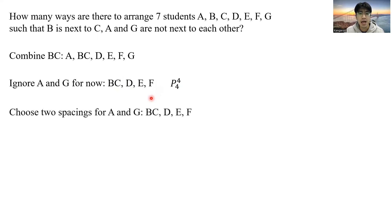Now we see that in between the four students here, there are five spacings. And if I put the students A and G at these five spacings here, I can make sure that they are not next to each other. So to choose two spacings from five spacings, there are 5C2 ways.